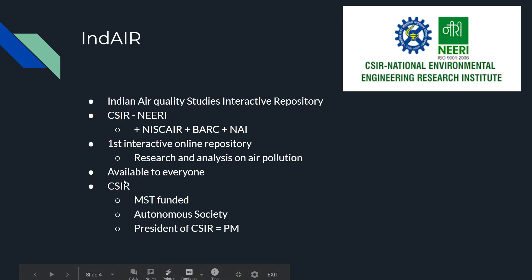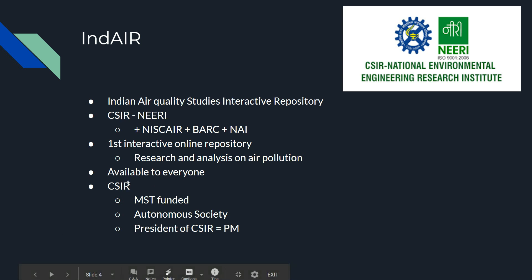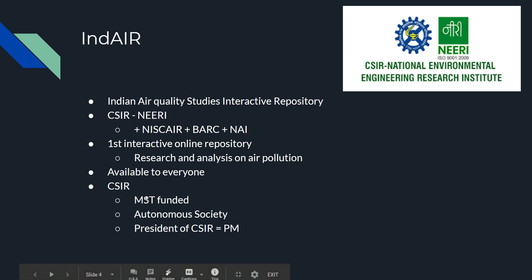What is CSIR? Its full form is Council of Scientific and Industrial Research. It is under MST — Ministry of Science and Technology — and major funding comes from there. It is also an autonomous society under Societies Act 1860, and the President of this society is our Prime Minister.